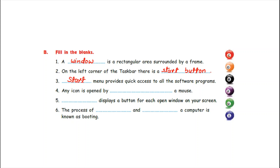Number four: any icon is opened by dash a mouse — double clicking a mouse. So you will write here double clicking. When you double click on the mouse, any icon can be opened. Number five: dash displays a button for each open window on your screen — it is taskbar. So write here in the fill-up: taskbar. Taskbar displays a button for each open window on your screen.